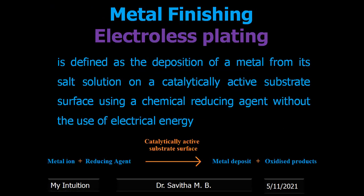Now there is another process: electroless plating. Electroless plating is the deposition of metal from its salt solution without using electricity. The electrode surface has to be made catalytically active, and electrons are liberated by using a reducing agent. In electroplating, the anode liberates electrons which go to the cathode; metal ions from the electrolyte accept electrons and get deposited.